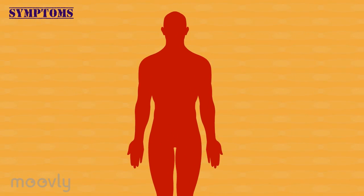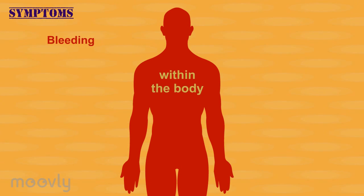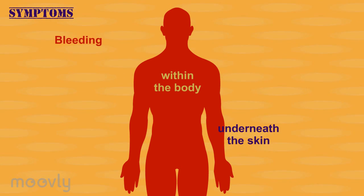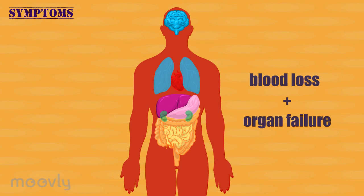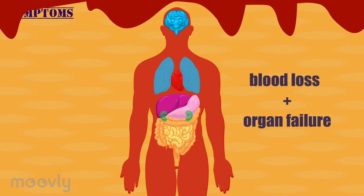The blood vessel damage causes bleeding, which occurs within the body, underneath the skin, as well as from eyes, nose, and ears. Finally, organs start failing. It is the blood loss in combination with organ failure that makes Ebola so deadly.